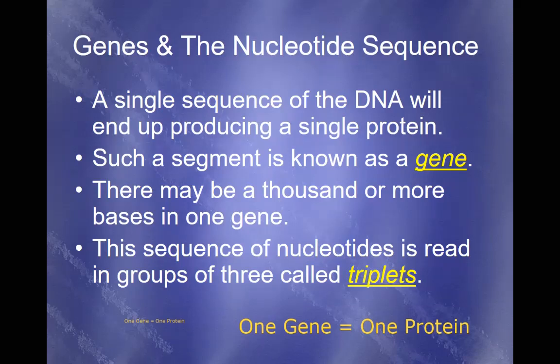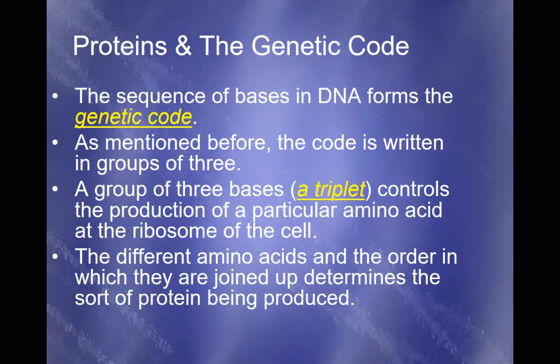There may be a thousand or more bases in just one gene. This sequence of nucleotides is read in groups of three called triplets. When we talk about a reading frame, every 'word' in DNA is written in a group of three bases — what we call a triplet. These triplets create a sequence known as the genetic code. A group of three bases known as a triplet controls the production of a particular amino acid at the ribosome of the cell.